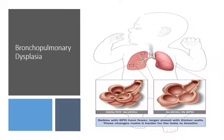Bronchopulmonary dysplasia occurs when an infant's lungs become irritated and don't develop normally, resulting in fewer but larger alveoli with thickened walls. Those thickened walls make it difficult for oxygen to cross from the alveoli into the bloodstream, despite increased respiratory effort. This condition is commonly seen in low-weight infants born two or more months prematurely.